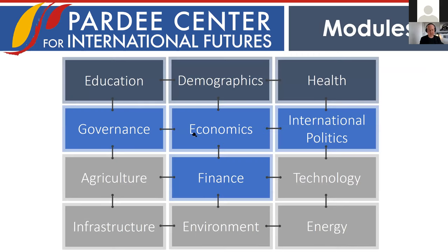The main modules we look at start with human systems at the top: people counted through demography and their ages, the education they can obtain, and the lives they live through hopefully healthy, long lives. Then there's the social layer — the economy, governance, what governments do, finance in terms of what governments spend and how they obtain revenue, and how different societies relate through international politics. Finally, physical systems: agriculture, technology, infrastructure, the environment, and energy to make the world work.